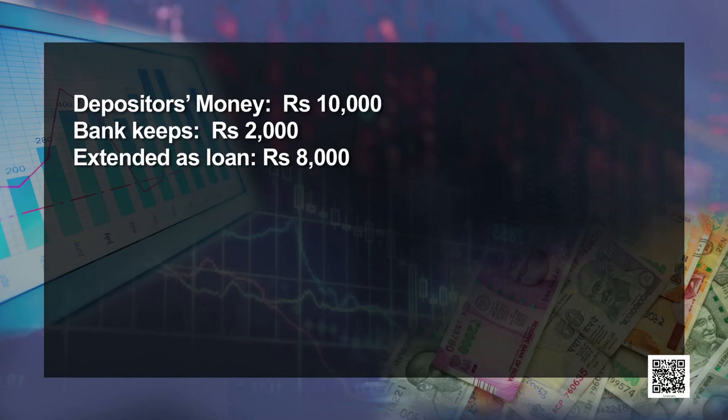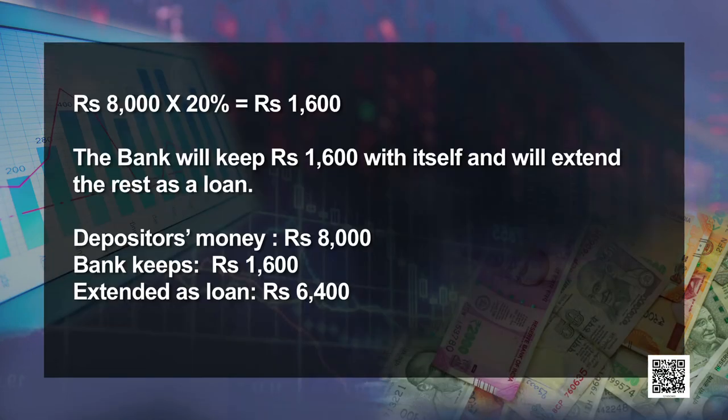The borrower will deposit that 8,000 rupees into their own bank. The same cycle repeats with the next bank — it also keeps 20% of 8,000, which is 1,600 rupees, with itself and extends 6,400 rupees as loans. Then the next borrower deposits 6,400 rupees into the next bank, which also keeps 20% — that is, 1,280 rupees — and extends 5,120 rupees as a loan.